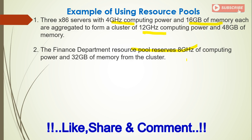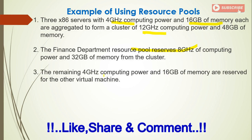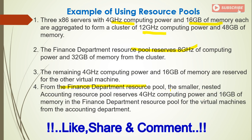So the finance department took 8 GHz of computing power and 32 GB of RAM from the cluster. The remaining 4 GHz and 16 GB are reserved for other virtual machines. Going further, a smaller nested accounting resource pool reserves 4 GHz of computing power and 16 GB of memory within the finance department resource pool for virtual machines from the accounting department.